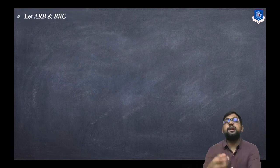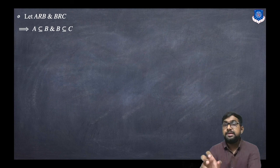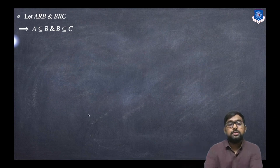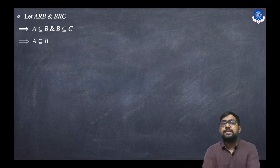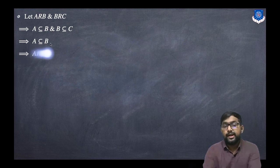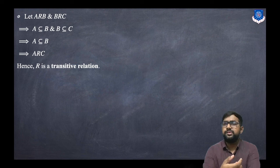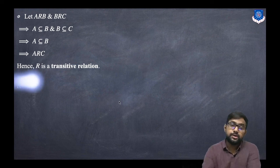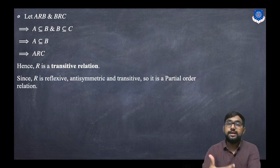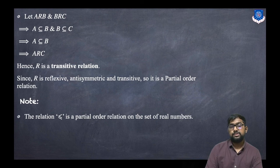For transitivity: if A is related to B and B is related to C, then by definition A is a subset of B and B is a subset of C. By the property of subsets, A has to be a subset of C. Hence A is related to C, so R is a transitive relation. Since it is reflexive, anti-symmetric, and transitive, it is a partial order relation.